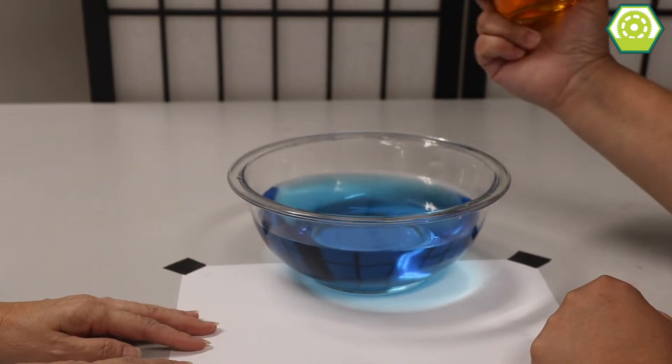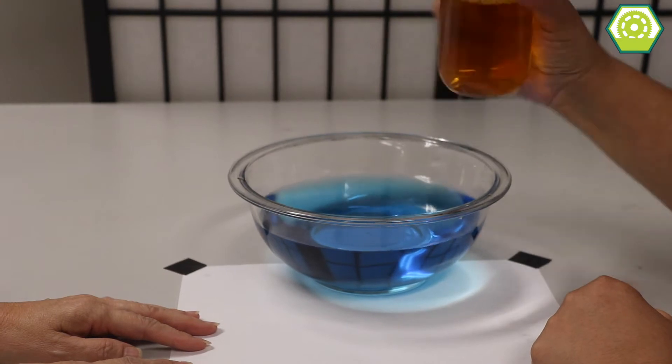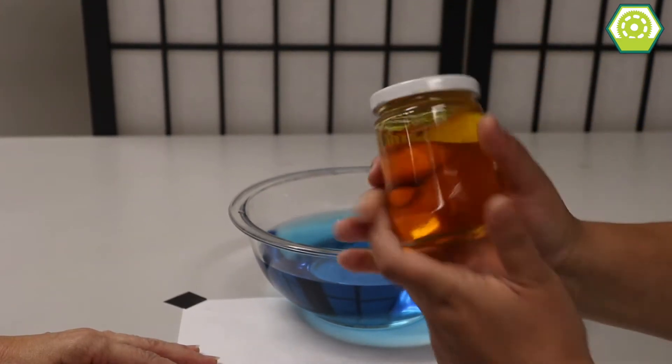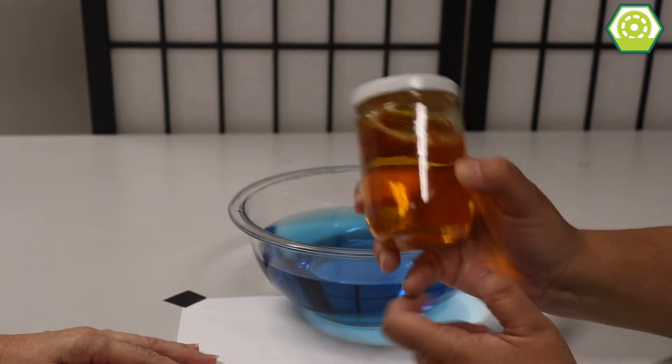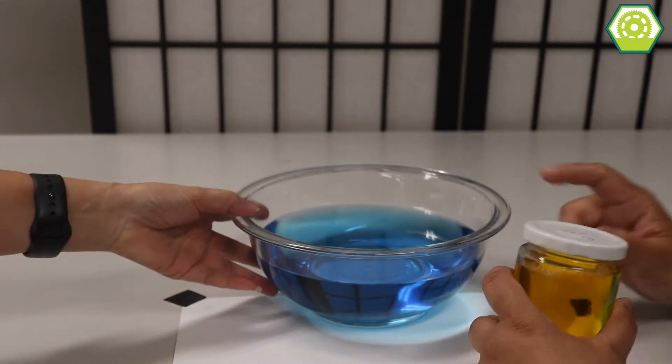Blue like the sky. And I have a jar of? Of lemon juice? Yellow water. So this is just tap water with yellow food coloring and this is just tap water with blue food coloring.